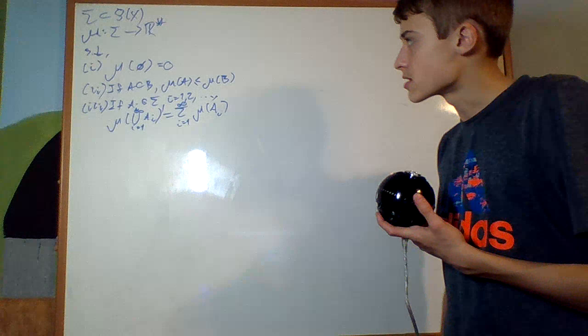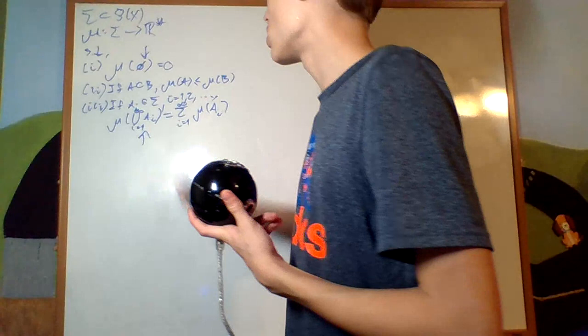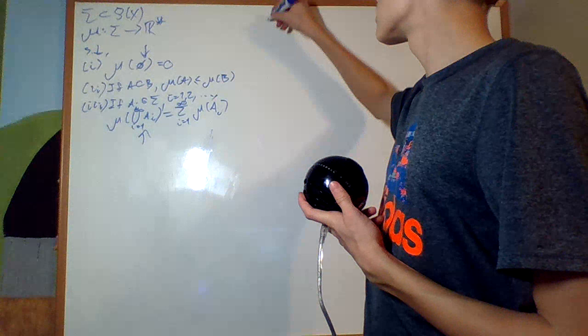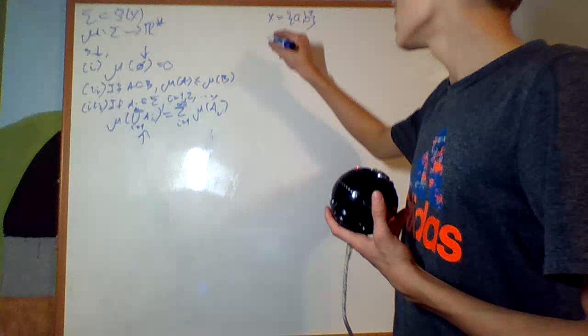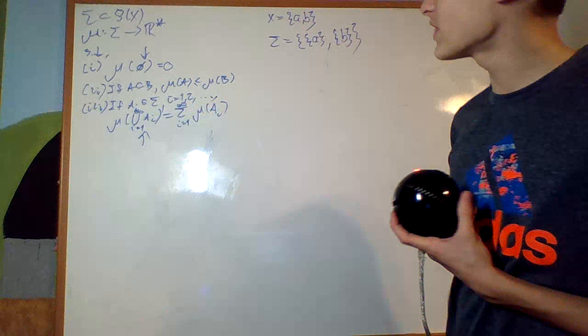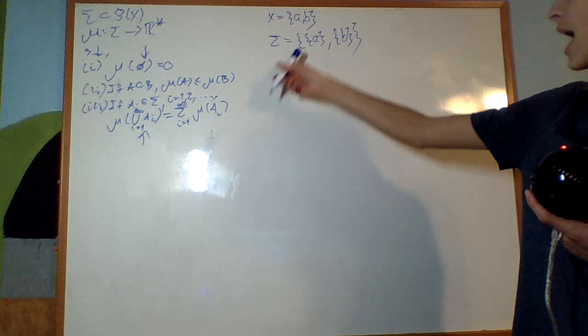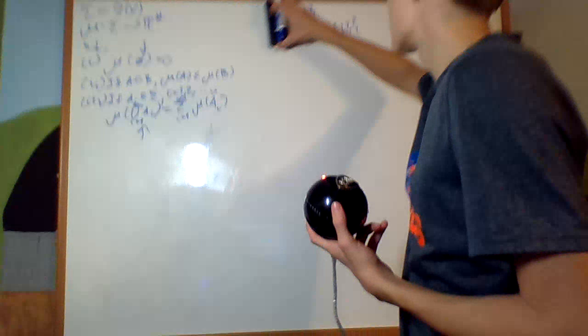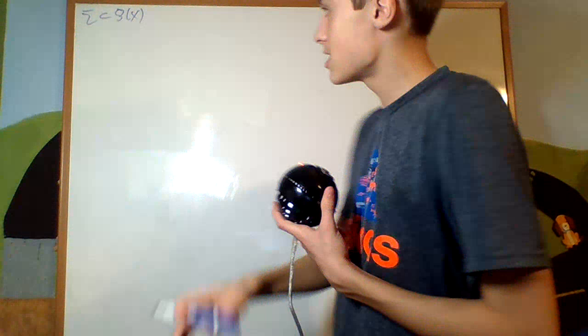But there are a couple of problems with this. How do we know that the empty set is in there? And how do we know that it's closed under countable unions? This isn't intrinsic of all sigma. For example, take X to be the two-element set, and take sigma to be the set containing just {a} and {b}. It's a perfectly fine set of subsets, but it's not closed under unions, it doesn't have the empty set in it. So that's not a very useful set. Instead of saying just any sigma, a subset of a power set, we need to have a special property — that this is a sigma algebra.